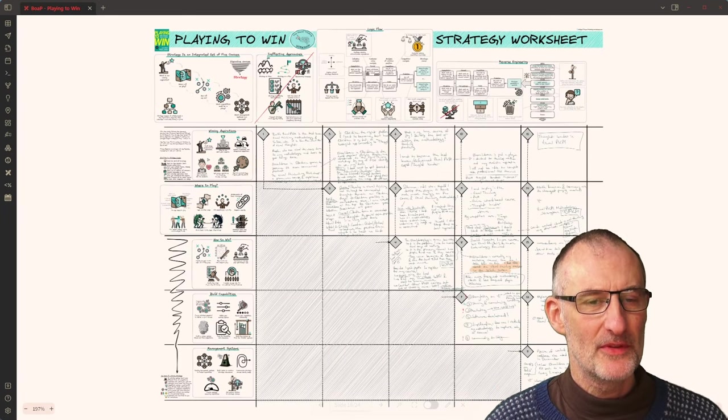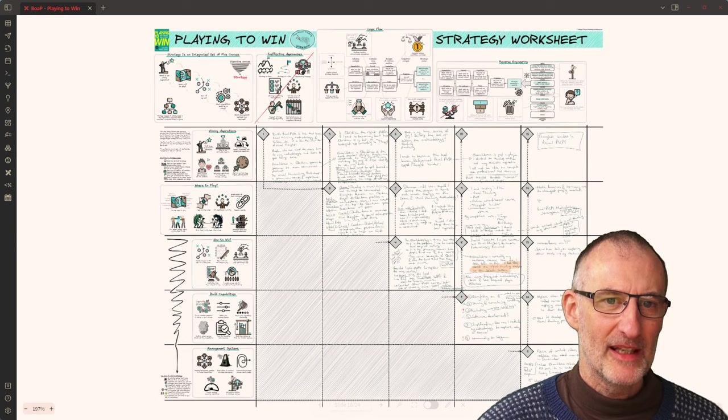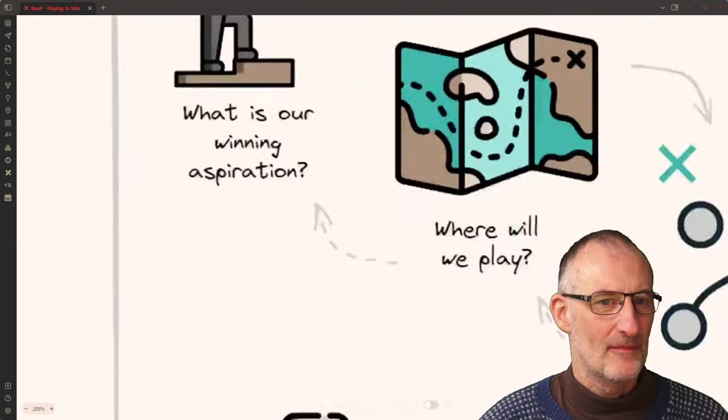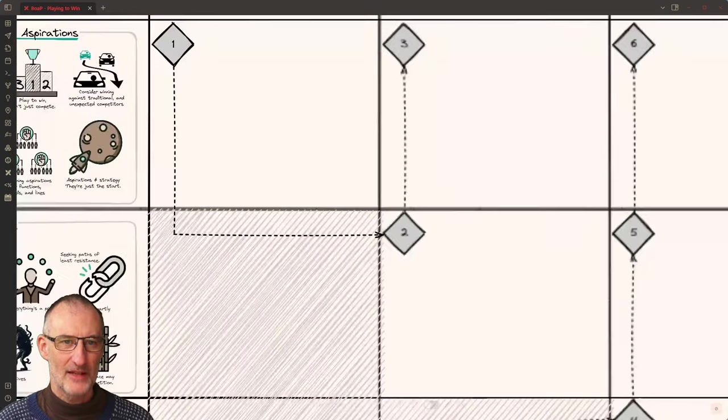So with that, now let's spend just a few minutes talking about how I think you should be filling out this form. It's really very simple. So you should fill in the table following the sequence of numbers. So you first fill in winning aspirations, then where to play and so on. We're going to look at this in one second. And as you fill this out, you should use the logic flow and the reverse engineering tools to guide your thinking.